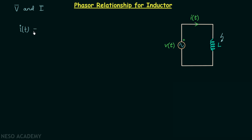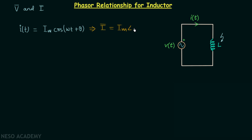Let us say that I(t) is equal to Im·cos(ωt + θ), the standard sinusoid. From here we can have the corresponding phasor representation of current I(t): the current phasor I is equal to Im ∠θ.